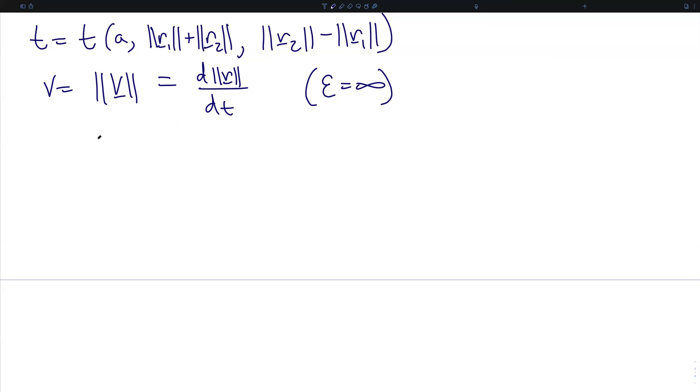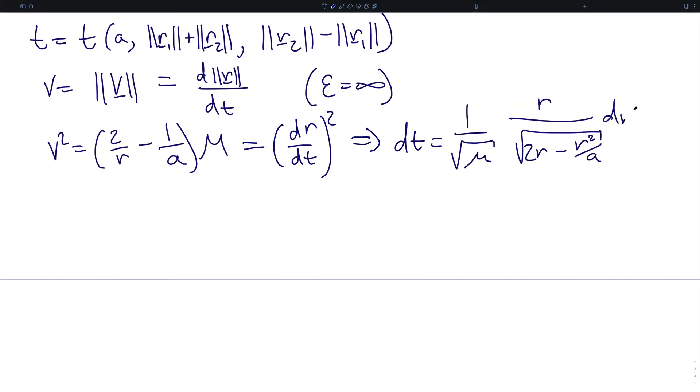But if we are able to write this, then we can take advantage of the vis-viva integral, which in this case only is dr dt quantity squared. And from this, we write that dt is equal to 1 over the square root of the gravitational parameter times r over the square root of 2r minus r squared over a dr. We have exact differentials on both sides, so we would like to integrate this.